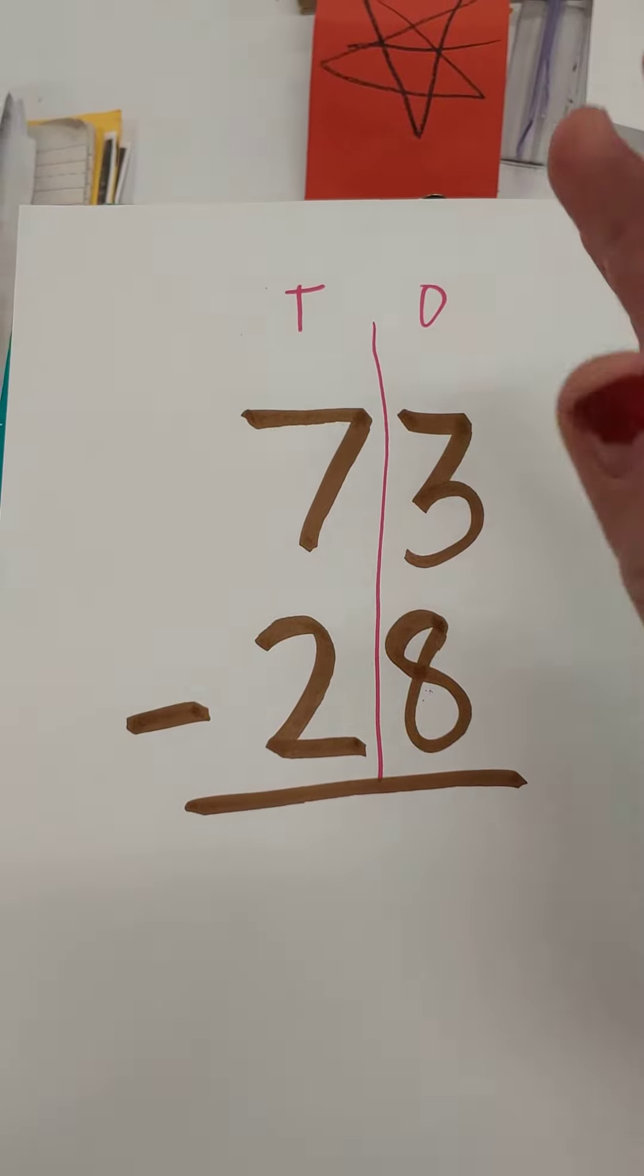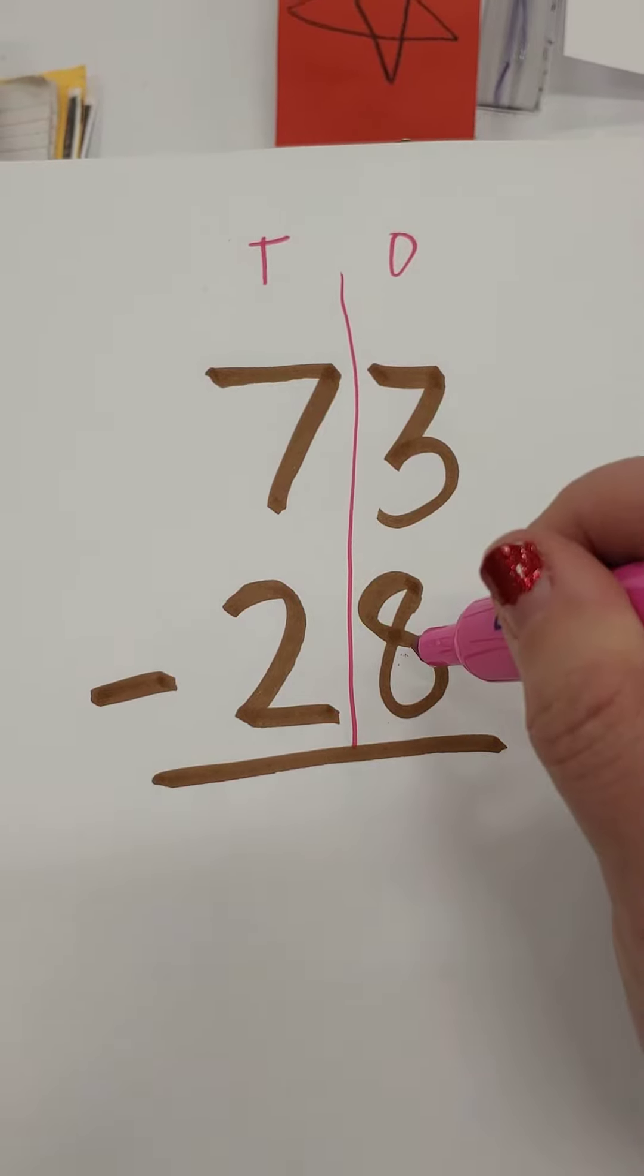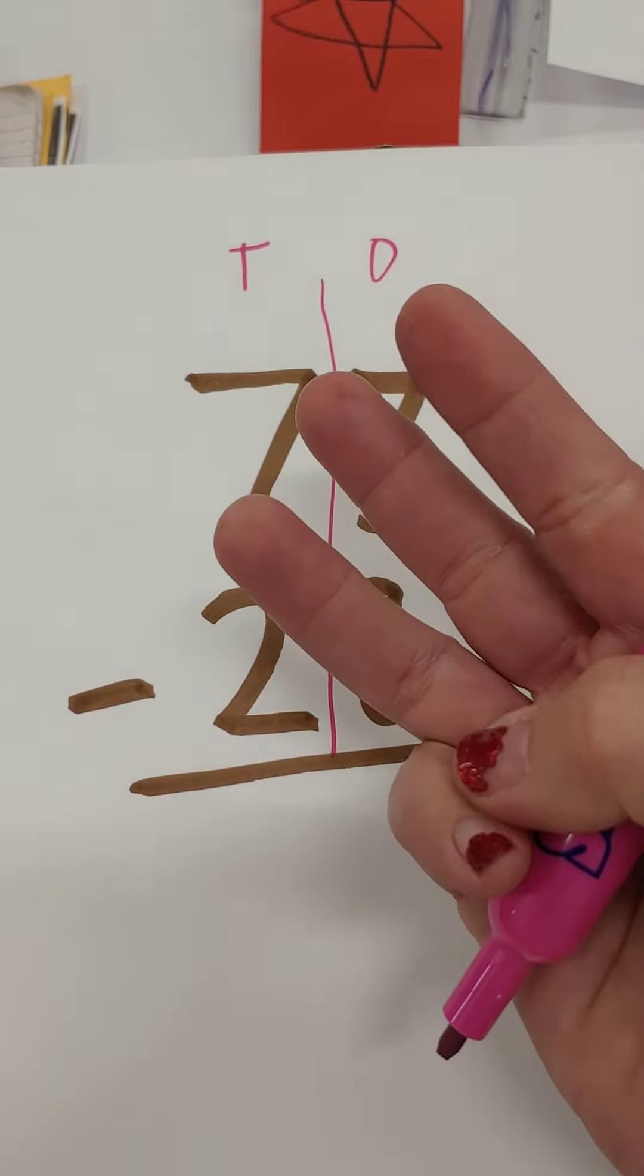Start with the ones. When we do this trick, start with the ones. 3 take away 8. I don't have enough, can't do it.